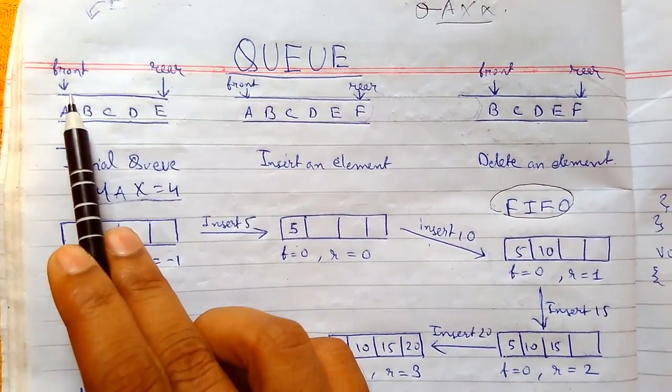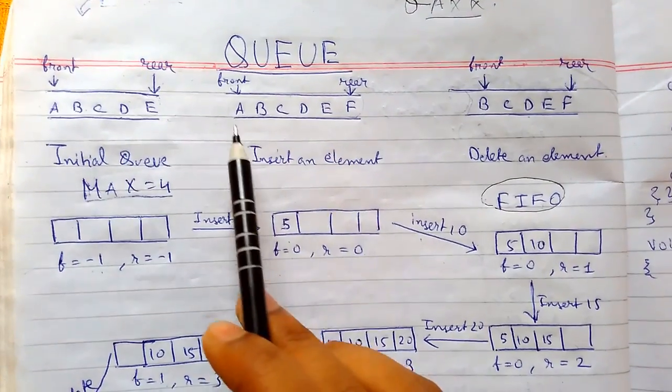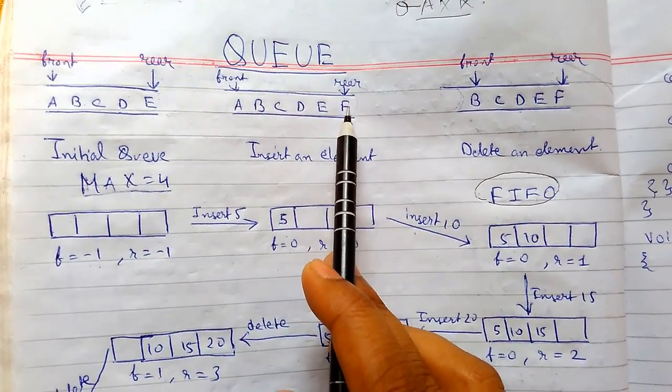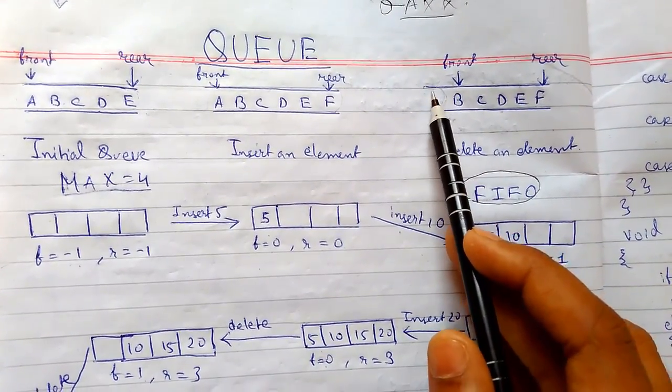This is the initial Queue. The front is pointing here and rear is pointing here. When we are inserting an element, the rear has been changed and the element has been inserted. Similarly, when we are deleting an element, the deletion will take from this end.